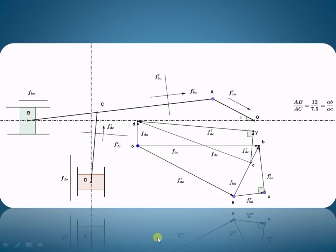Now let us see how to draw the acceleration diagram. Since crank OA is rotating uniformly, it will have only radial acceleration. The radial acceleration of A with respect to O is always directed towards the center O, because centripetal acceleration is always directed towards the center. Similarly, radial acceleration of B with respect to A, taking A as center, is directed towards A.